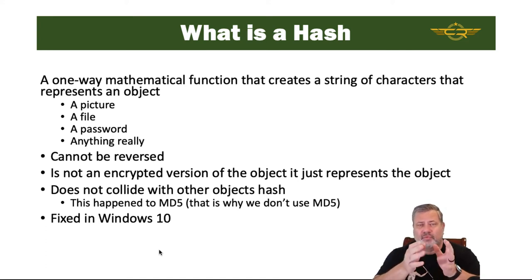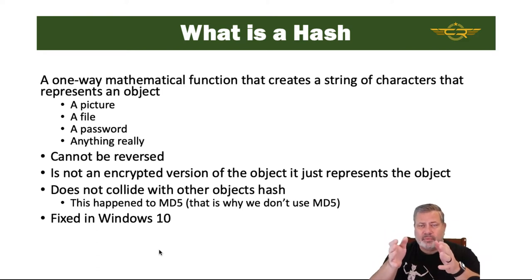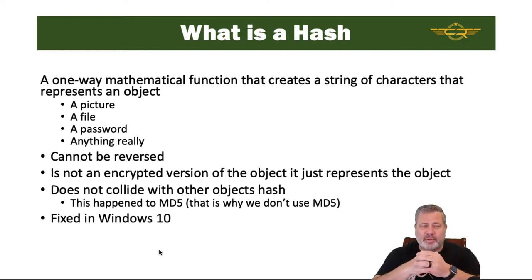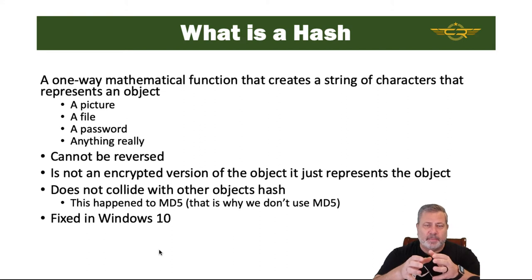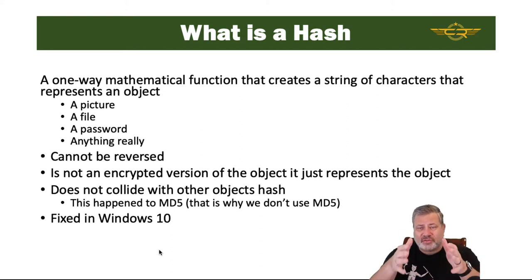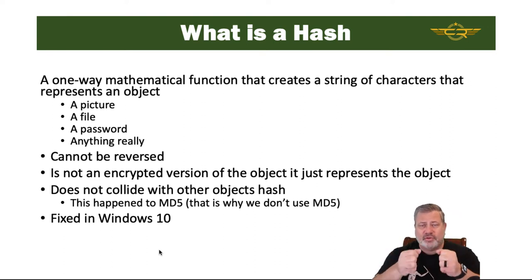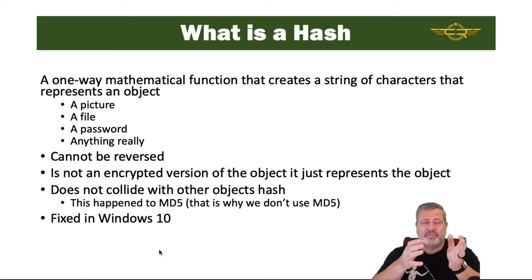If we hash a password, there should be no way to unhash that to come back to the password. We shouldn't be able to reverse a good hashing function. The hash is not an encrypted version of the object — it's just a representation of the object. And it makes sure that if anything in that object changes, the hash will no longer be valid. It can't be reversed.